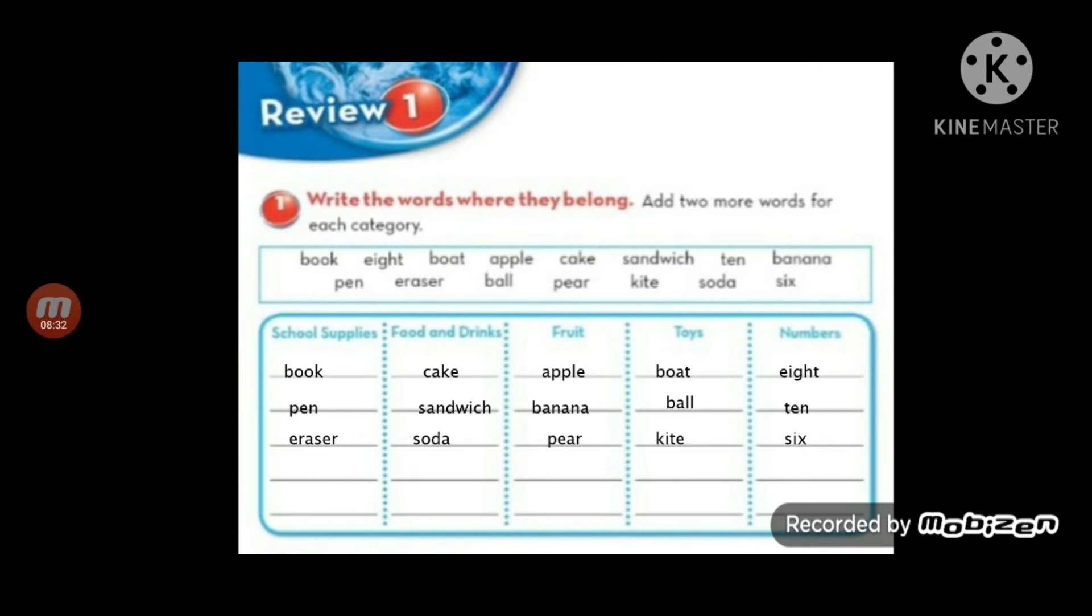Now let's make part two. I'll add two words under each group. Under School Supplies, we'll add notebook and crayons. Under Food and Drinks, I'll add milkshake and burger. Under Fruit, orange and grapes. Under Toys, airplane and elephant. Under Numbers, one and two.